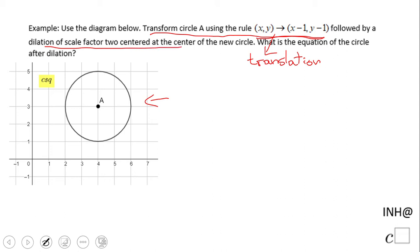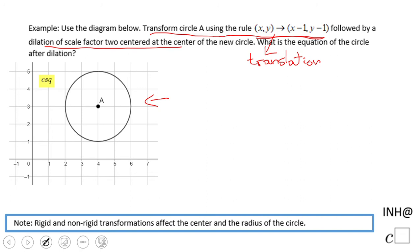What is the equation of the circle after the dilation? Let's try to approach this graphically, at least in part. I have here a statement which says rigid and non-rigid transformations affect the center and radius of the circle.